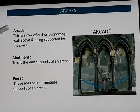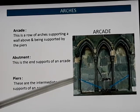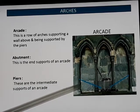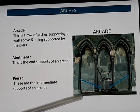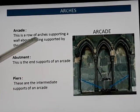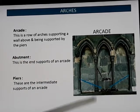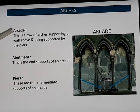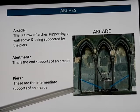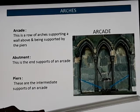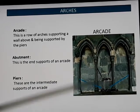Next are arcade, abutments, and piers. Abutments are the end supports of an arch. The piers are the intermediate supports or columns. A continuous series of arches is termed an arcade. So piers and abutments together form an arcade.